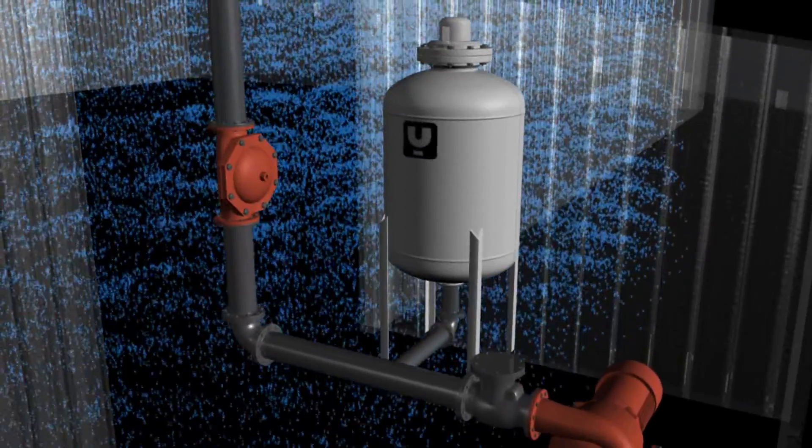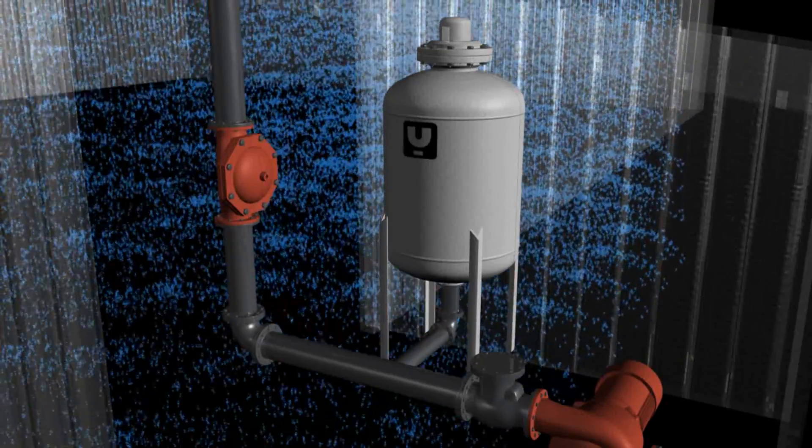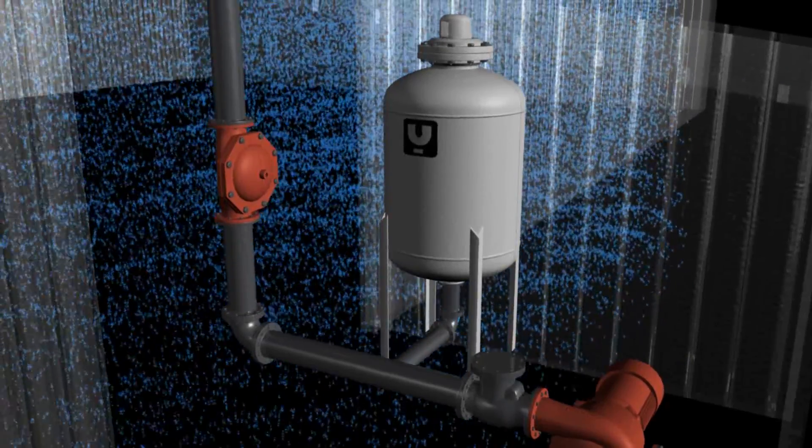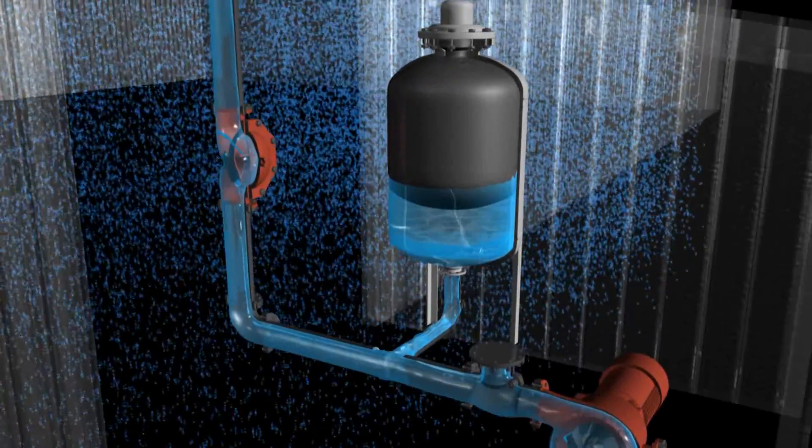After the deluge valve opens, a bladder surge tank is located in the system to provide water into the pipeline, preventing a column separation.